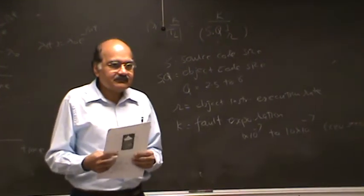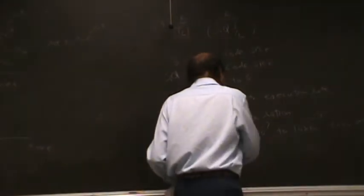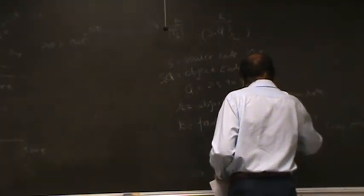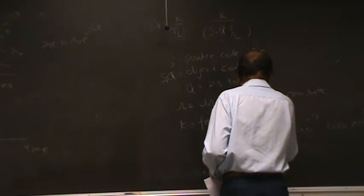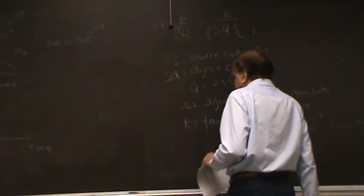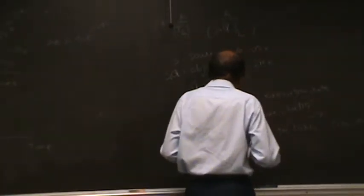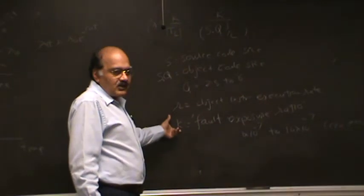K is assumed to be a constant. A student asks about the terminology. The professor corrects himself - it's fault exposure ratio. This is supposed to be some kind of constant.